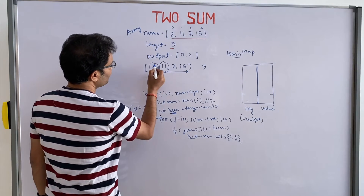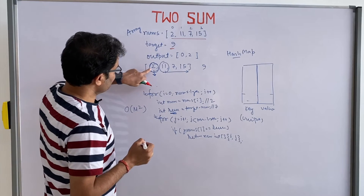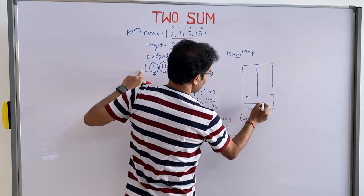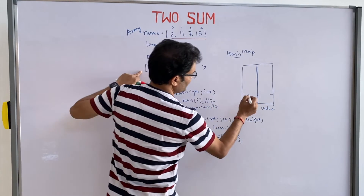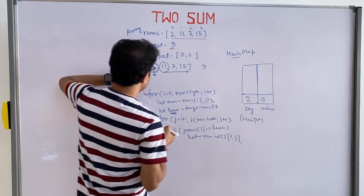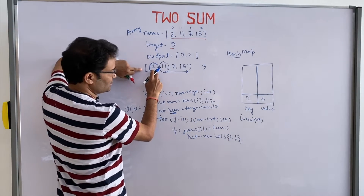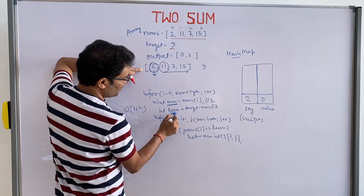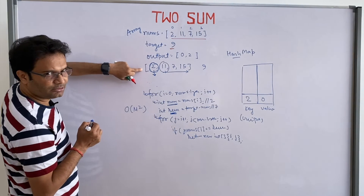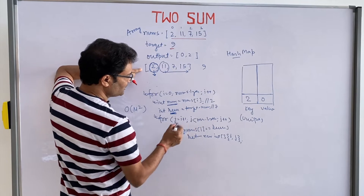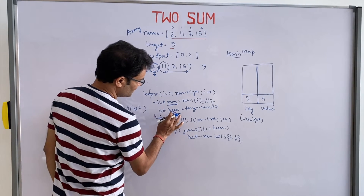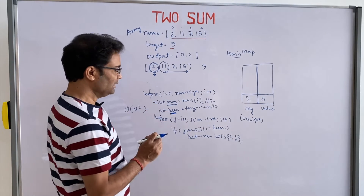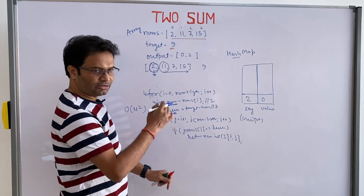Here is how it works: you start from 2. First you check if 2 is in the map — if it is not, put 2 as the key and its index 0 as the value. When you are at the first position, nums[i] = 2, i is the index, and you are looking for the remaining number 7. You check whether this remaining number is present in the HashMap or not. If it is not present, insert the current number.